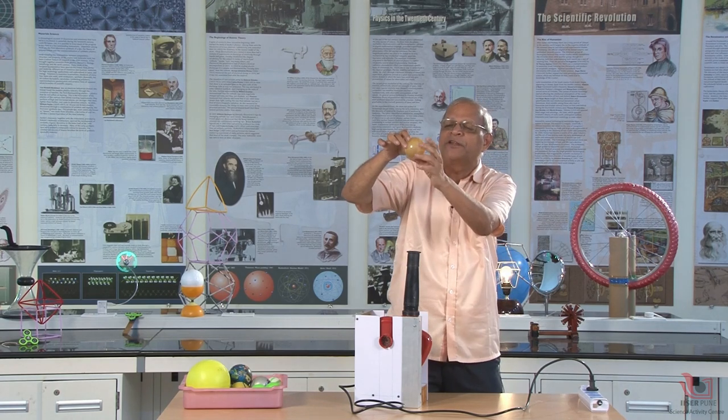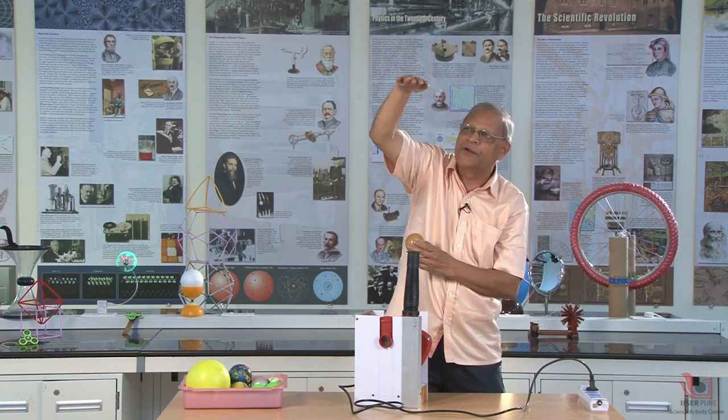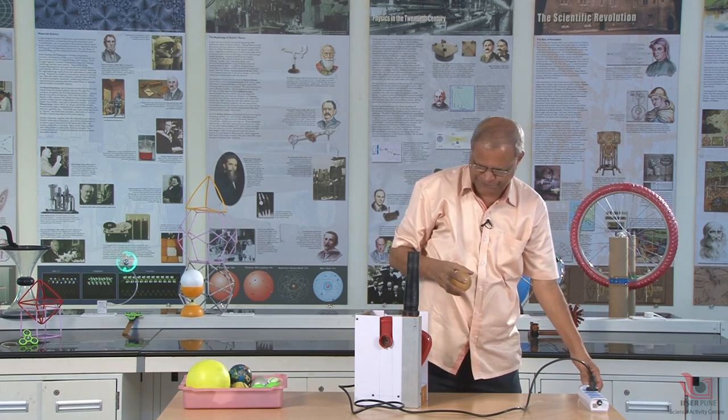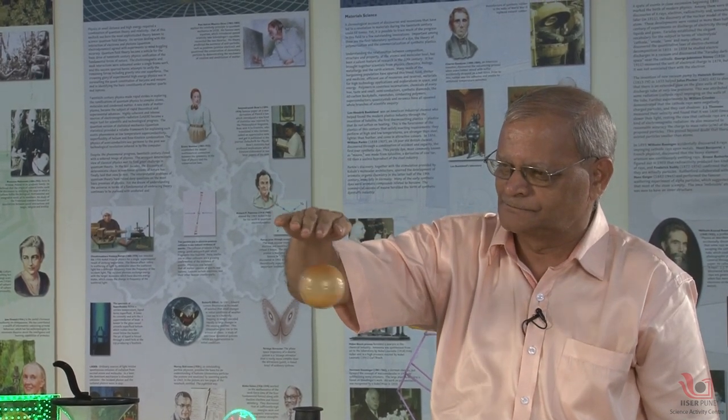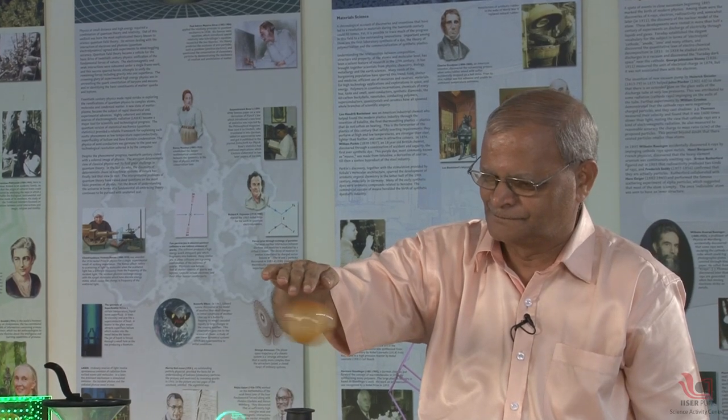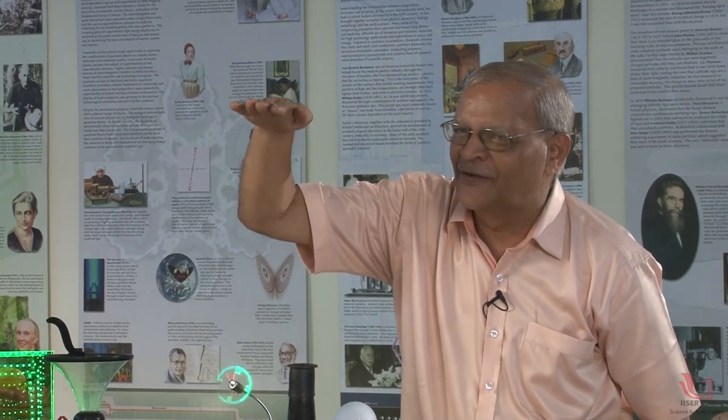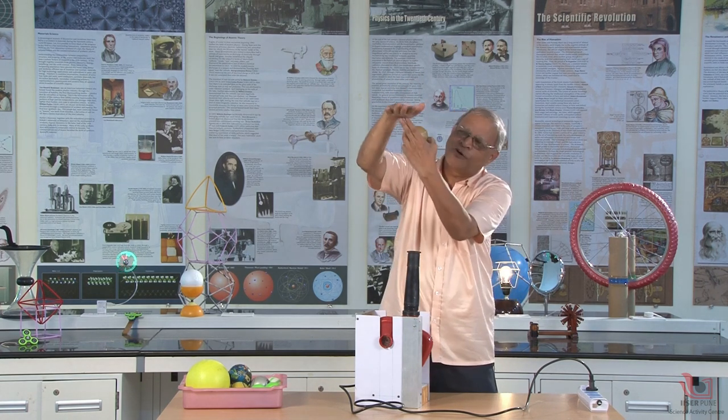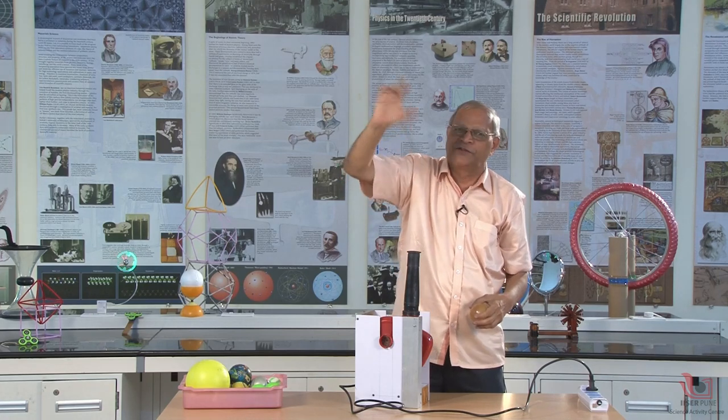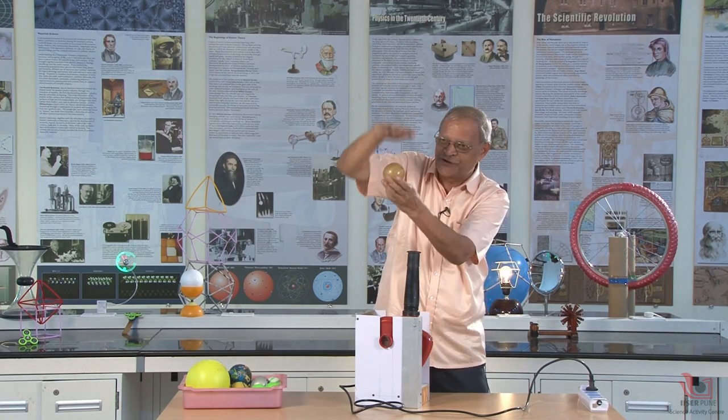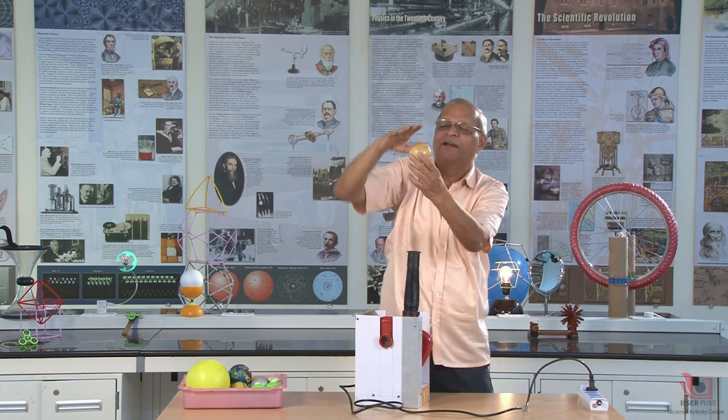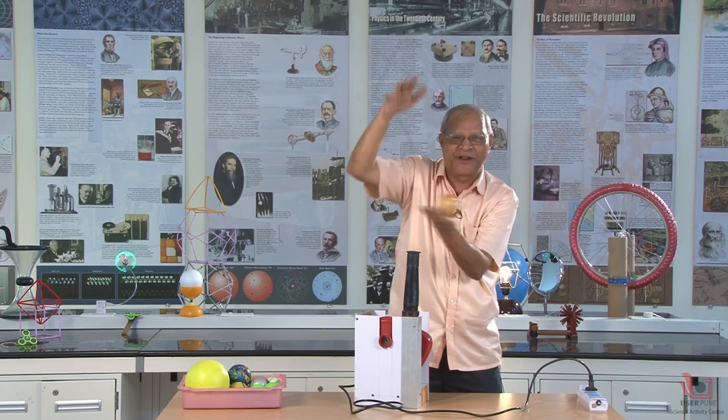But if I keep this ball floating and suppose I bring my hand here and I bring my hand down, see what happens. We observe that when I bring my hand down it cannot touch the ball because the air which goes towards my hand will get reflected back and it will make pressure on the ball from the upper side also. So it will make an air cushion between the ball and my hand. And that is why the ball remains suspended in the two pressures. It is sandwiched between the two pressures. It is a very interesting phenomenon.